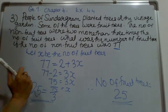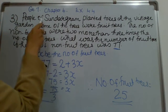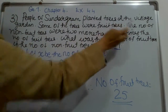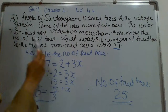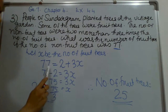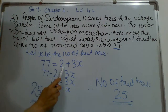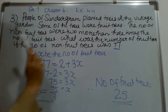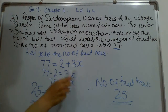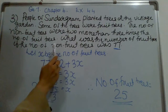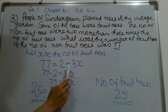Let x be the number of fruit trees — this is our statement. The number of non-fruit trees is equal to 2 more than 3 times the number of fruit trees. Now we know our equation.